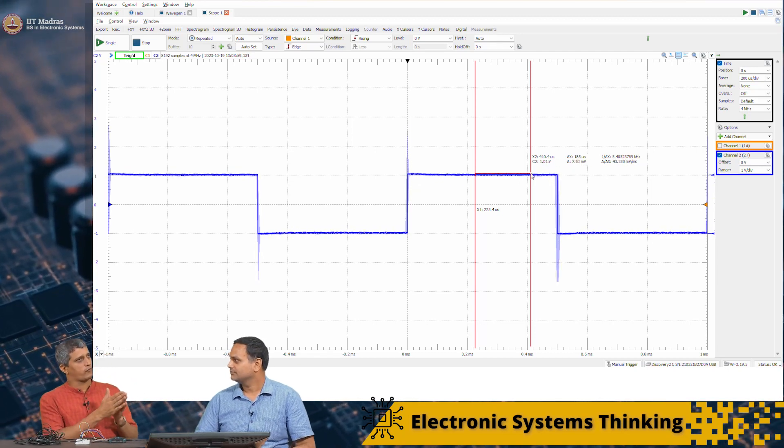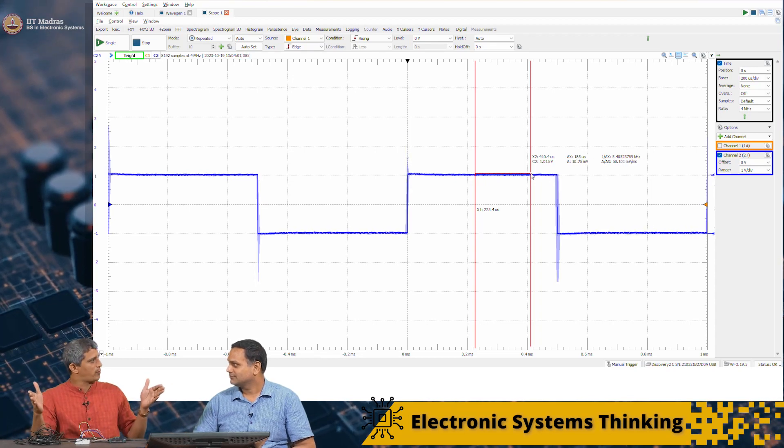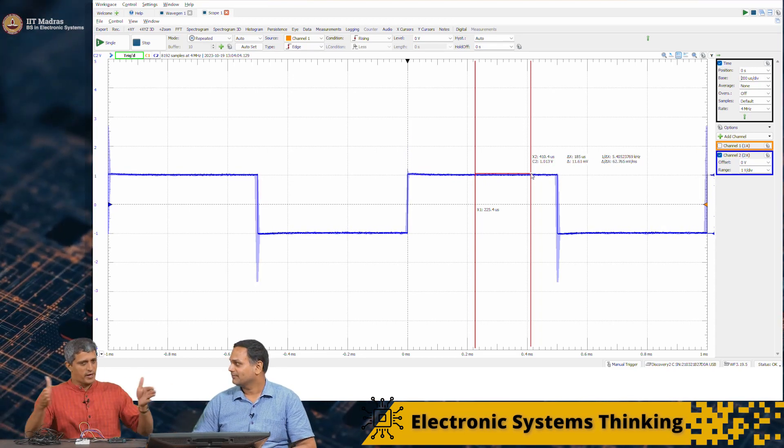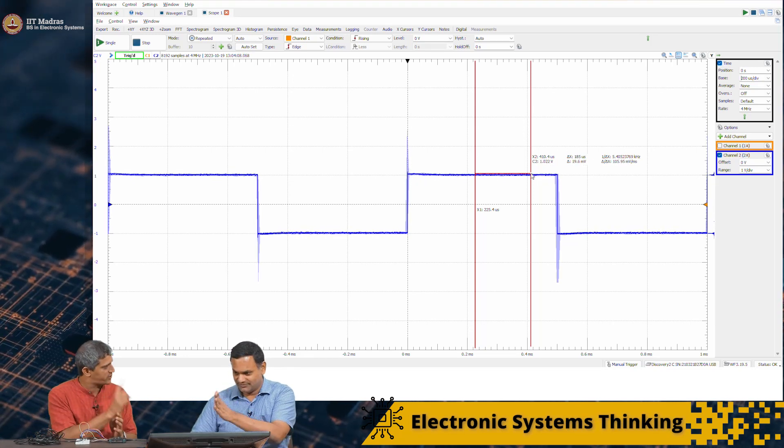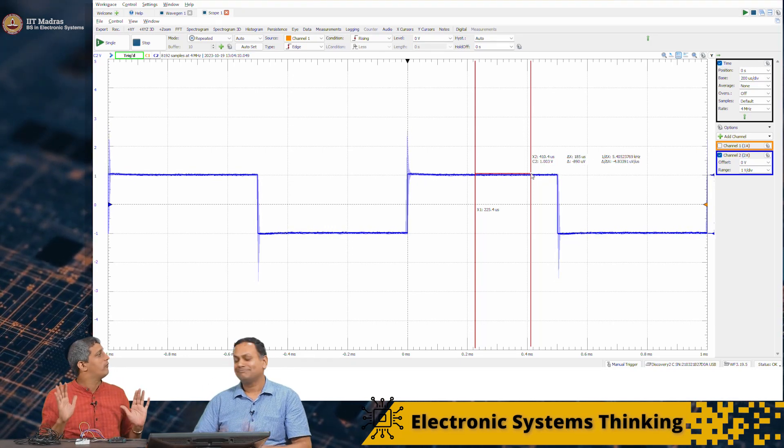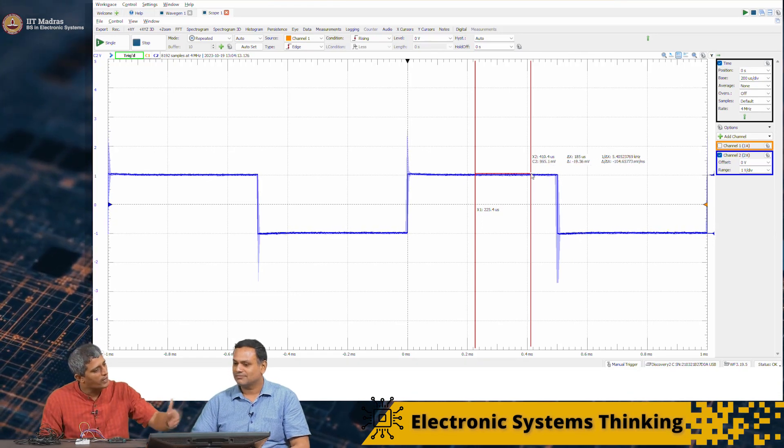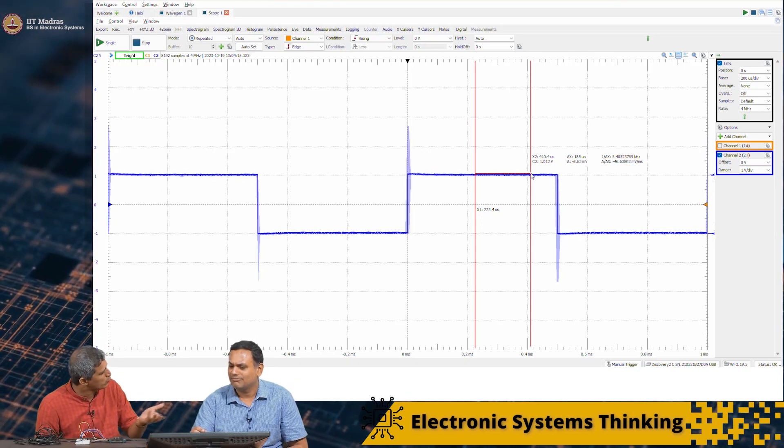This is where the advantage of actually spreading this over time is helping us. We have taken a single bit and spread it over time. And therefore, all we need to do is sample it at one instant where we get the right value.